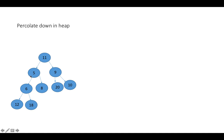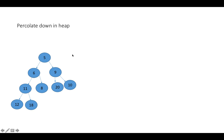We need to find which child is smaller. We compare 5 and 9 — 5 is less, so we swap 11 with 5. Again, 11 has children 6 and 8, and it is not satisfying the min heap property. We compare 6 and 8 — 6 is less — so we swap 11 with 6. After that, we check again: 11 is less than both its children, so the min heap property is satisfied. This complete tree is now satisfying the min heap property. This is called the percolate down operation.